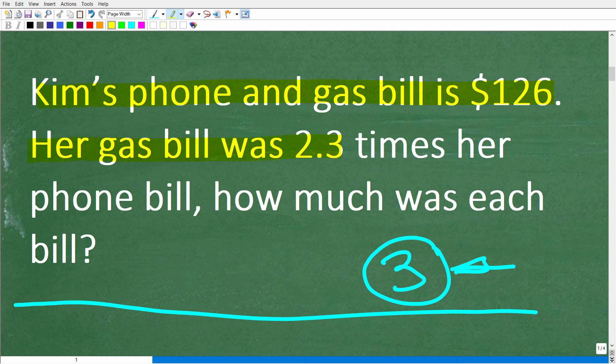So once again, Kim's phone and gas bill is $126. Her gas bill is 2.3 times her phone bill. And the question here is how much was each individual bill? So to answer the question, we need to determine how much was her phone bill and how much was her gas bill. Okay, so once you understand a question, what you want to do is try to model or visualize what's going on.